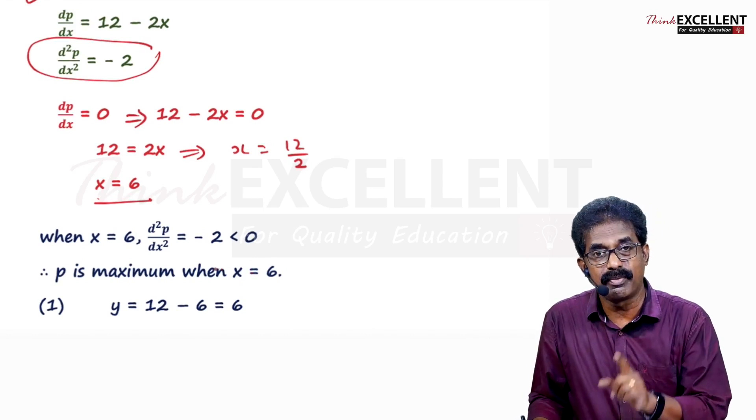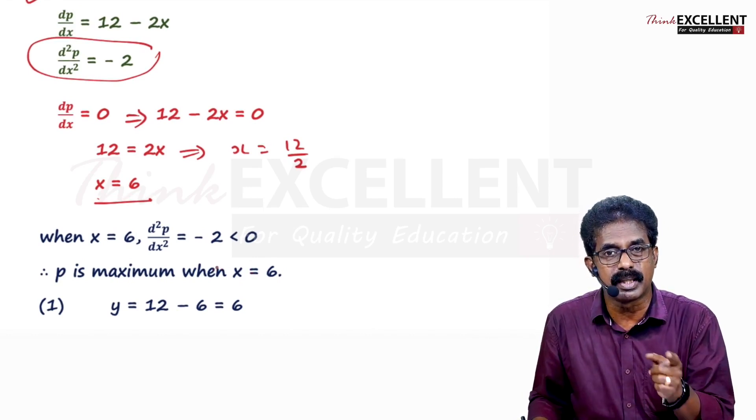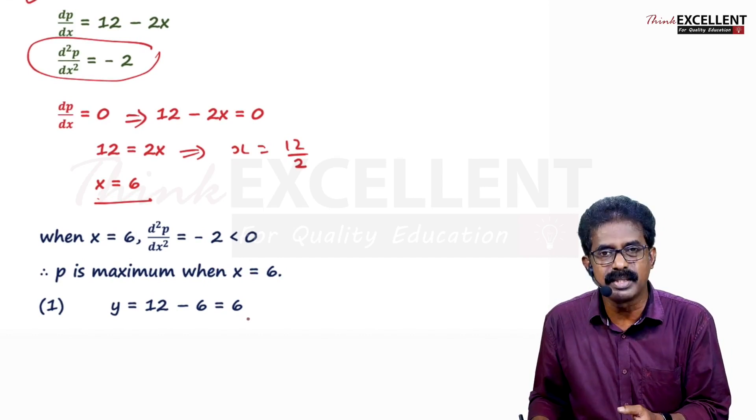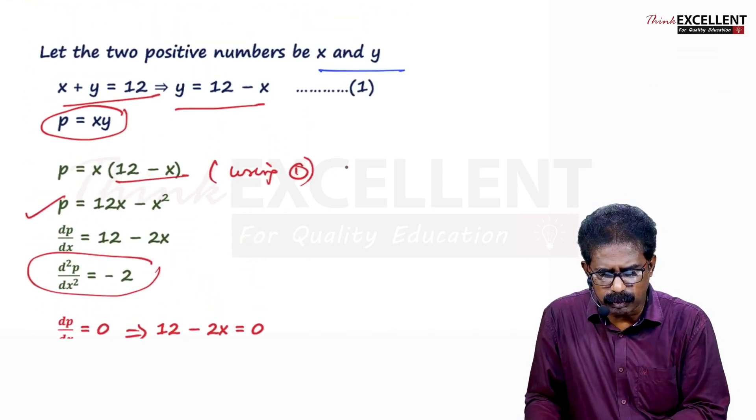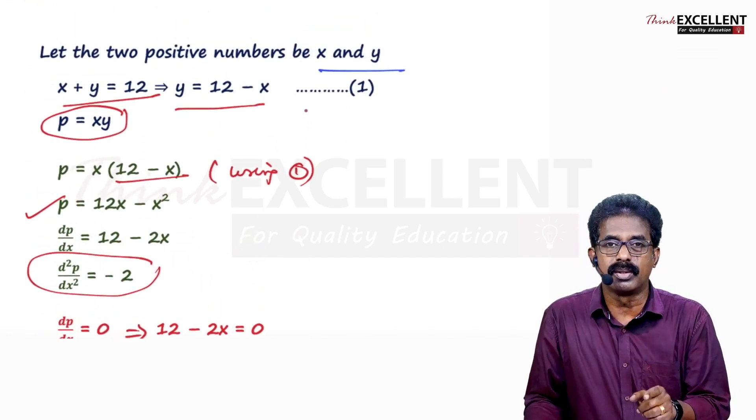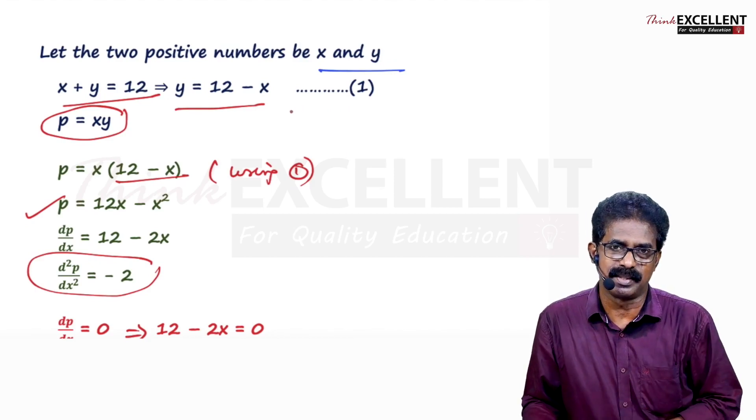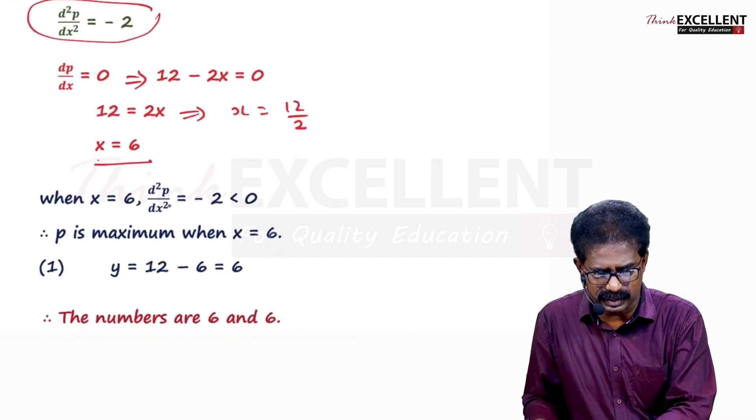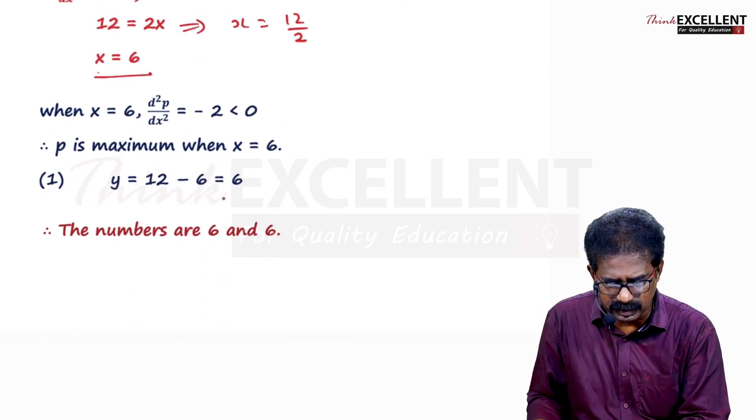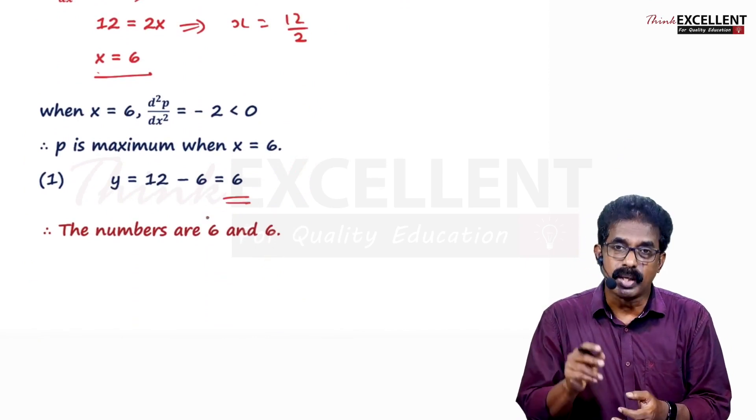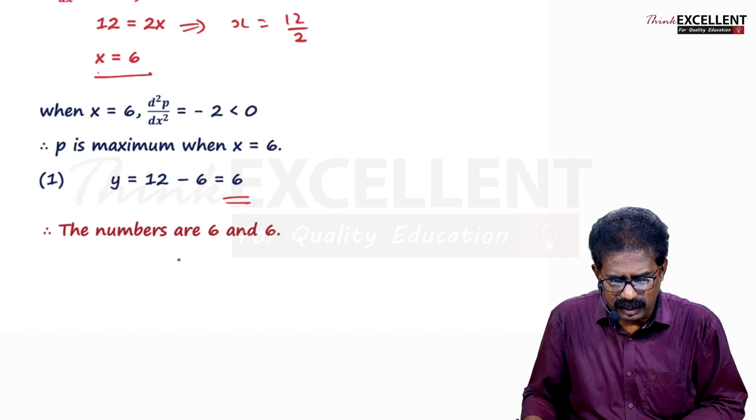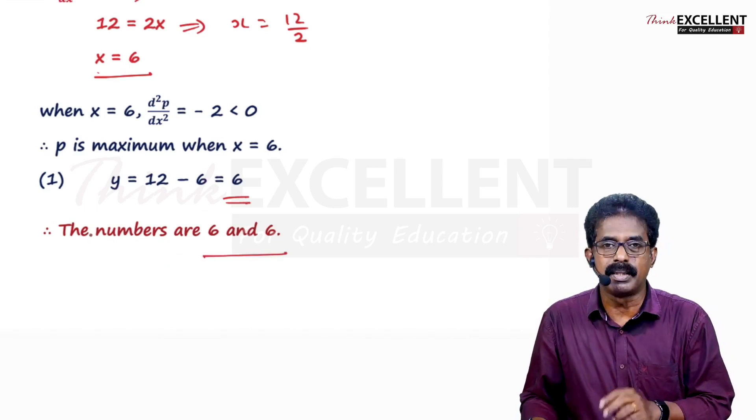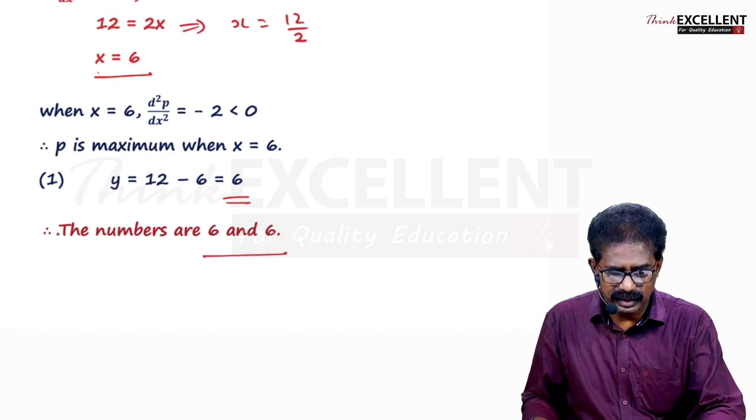Don't stop here. This is X value. Find two numbers. We have taken the numbers as X and Y. X value 6. You find Y value. Equation 1 says Y equal to 12 minus X. X value is 6, so 12 minus 6 is 6. So X value 6, Y value also 6. Therefore the numbers are 6 and 6.